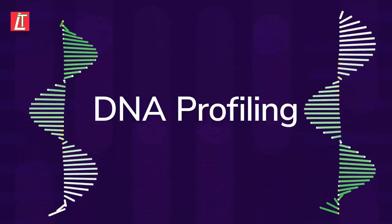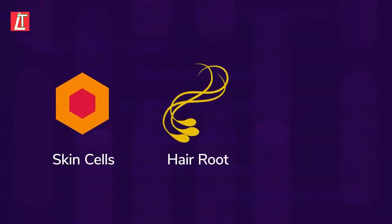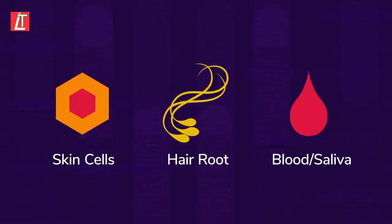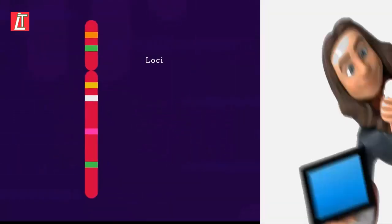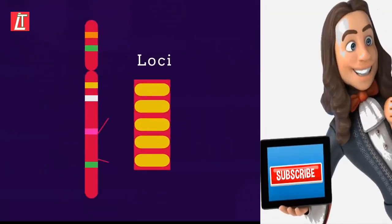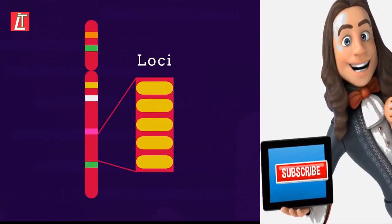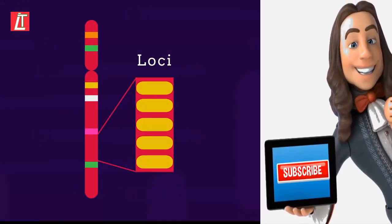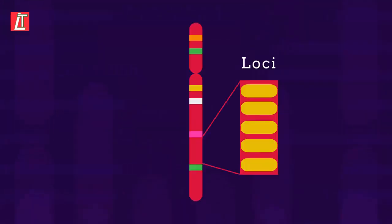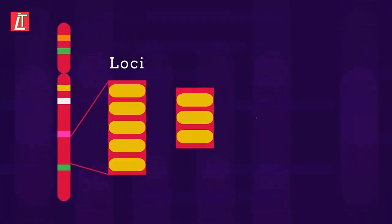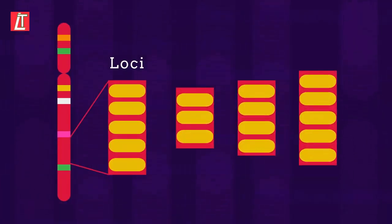It's a very sensitive technique which only needs a few skin cells, a hair root, or a tiny amount of blood or saliva. There are sections of chromosomes where instead of a gene consisting of a long sequence of bases, there are much shorter sequences of 3, 4 or 5 bases that are repeated many times.